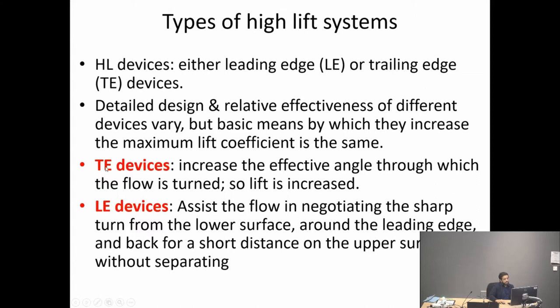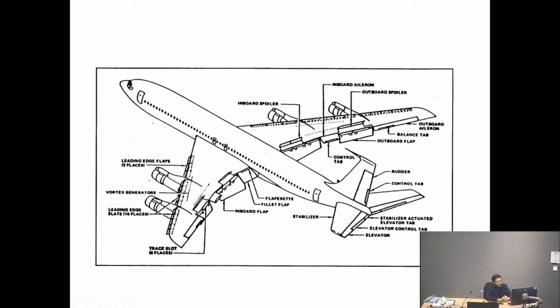We stopped at the point where we divided high lift devices into two main types: trailing edge devices and leading edge devices. Today I'm going to give an overview of some concepts you might find interesting. The aircraft is an incredibly complex machine, particularly in terms of ailerons, high lift devices, and the tail. All the complex systems that operate these devices from inside make the whole thing very complicated but necessary.